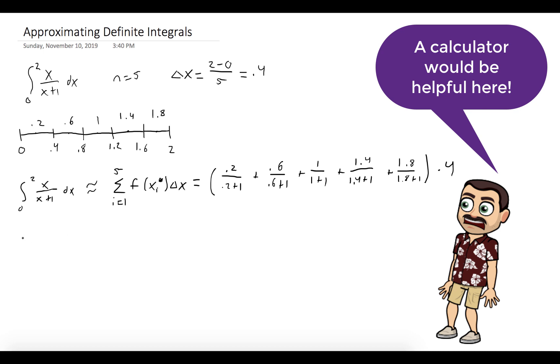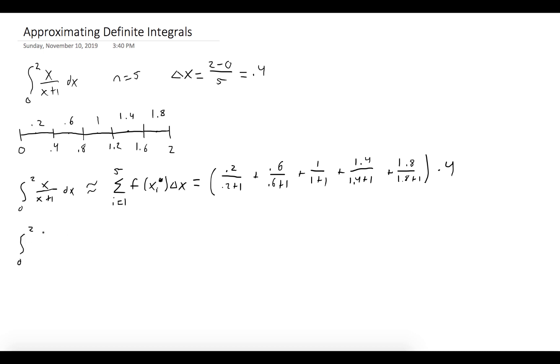We can plug this into a calculator and we see that the integral from zero to two of x over x plus one dx is approximately 0.9071.